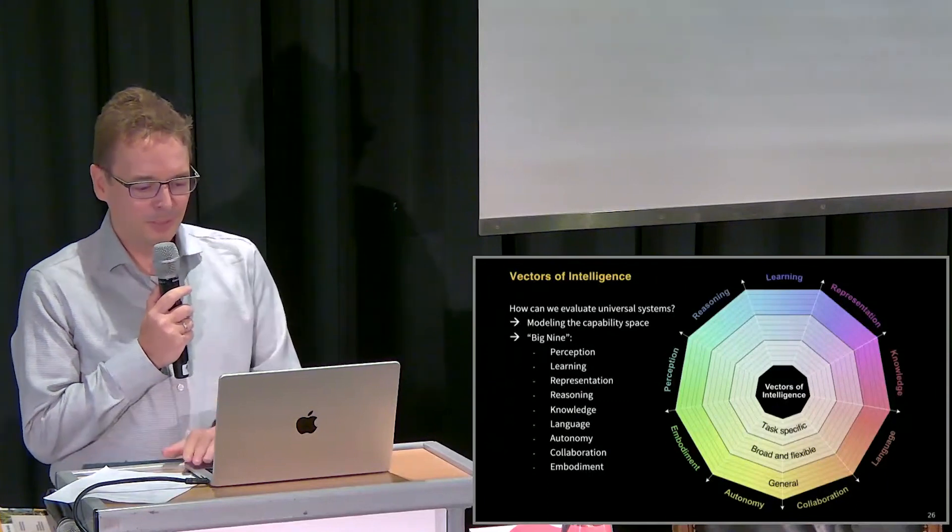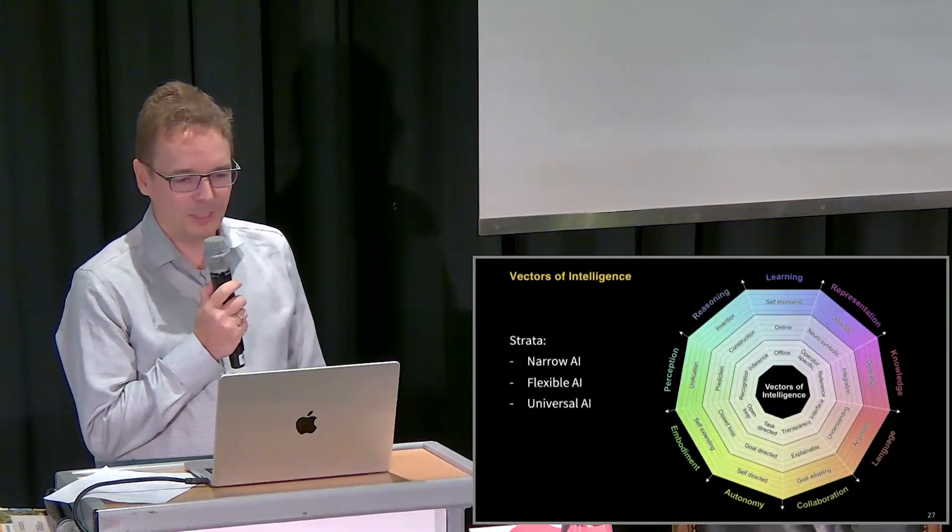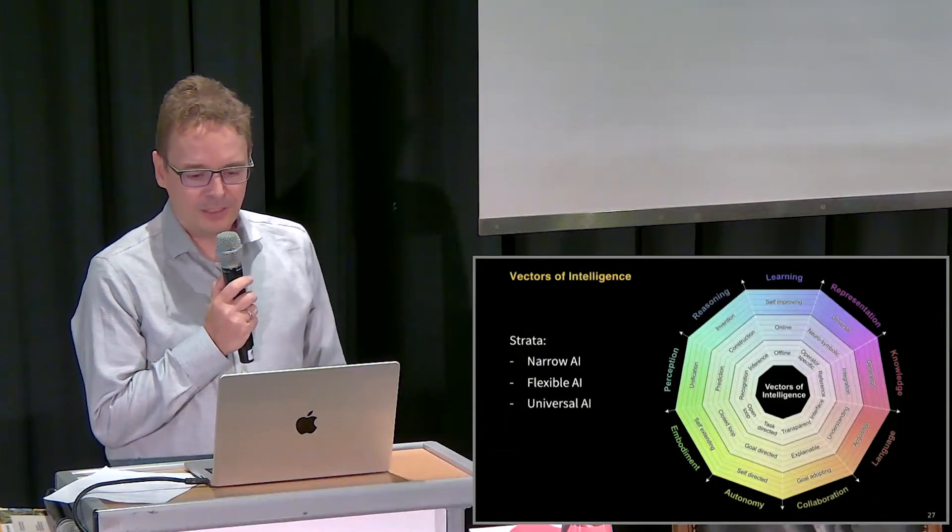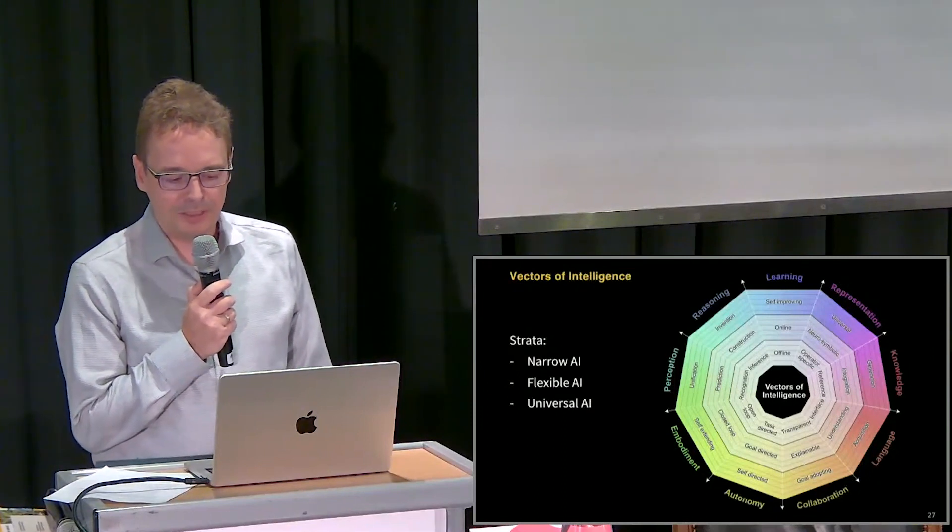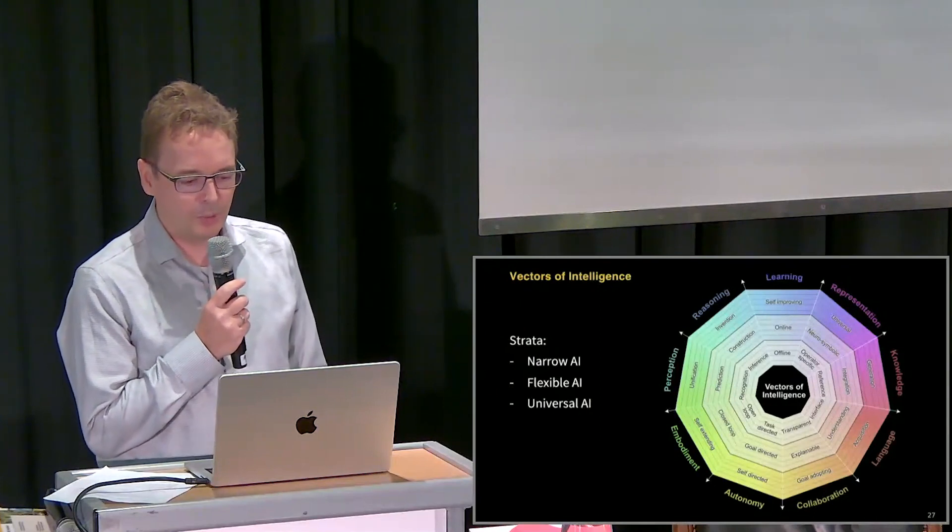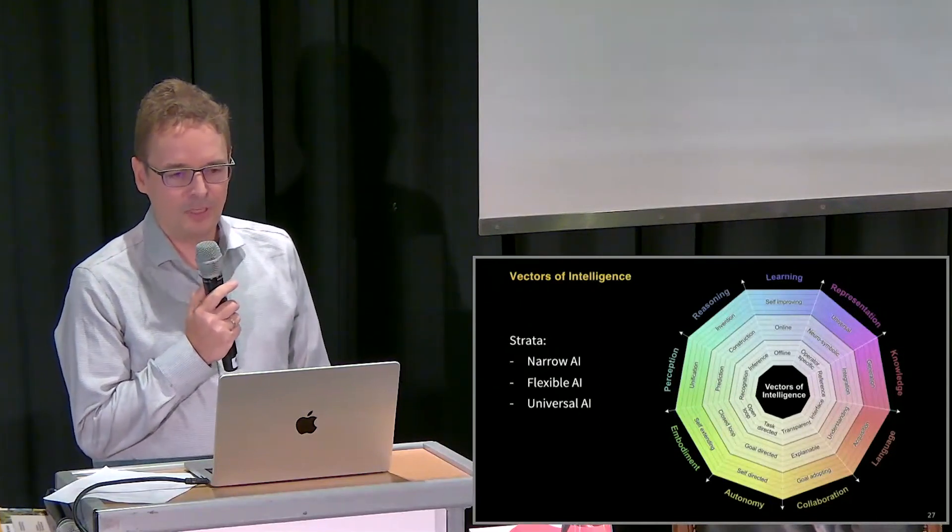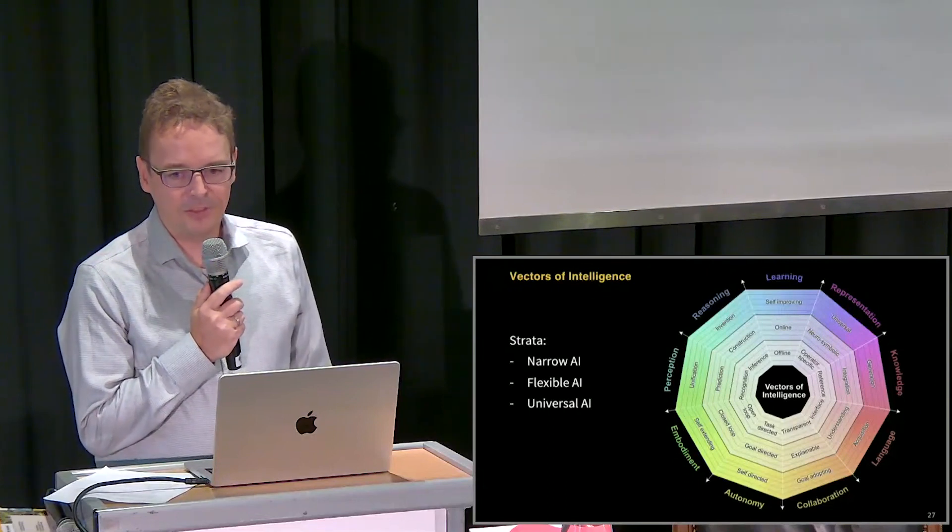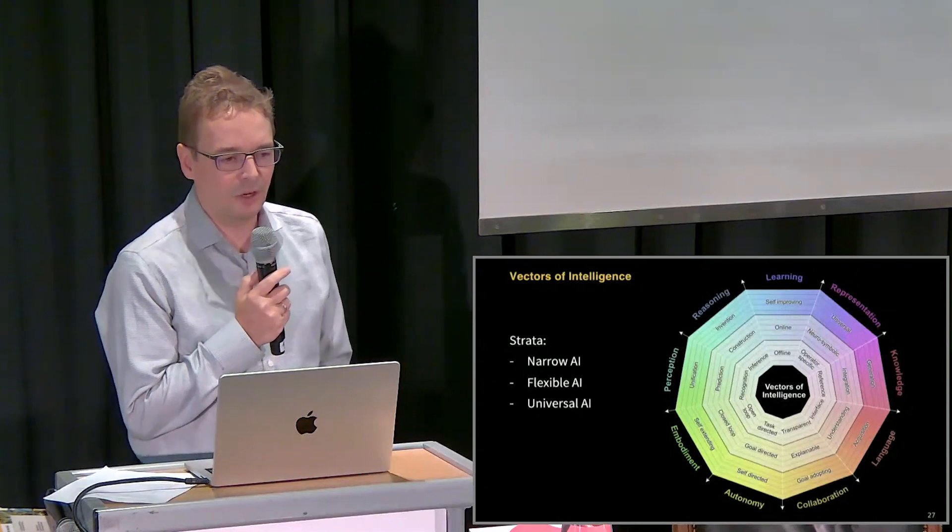They go from narrow on the inside to more and more universal on the outside. And once we understand such a space of capabilities like language acquisition and deep collaboration and autonomous behavior and the ability to control a body, to perceive your environment, to reason, to learn, to represent, all these abilities can be mapped onto existing systems and we can see which regions they occupy.